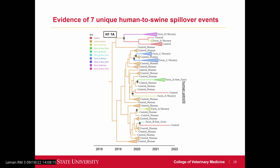Another question about the human spillover events: what farm type were those detected in, and did they appear to be self-limiting or was there any indication that they went into other pigs? They were detected in a mix of nursery and sow farm settings. They are pretty self-limiting, which is why we're not detecting them with passive surveillance at a national level. This is a much more accurate count of those events, but their relative importance, if they're not transmitting further, is up to interpretation.